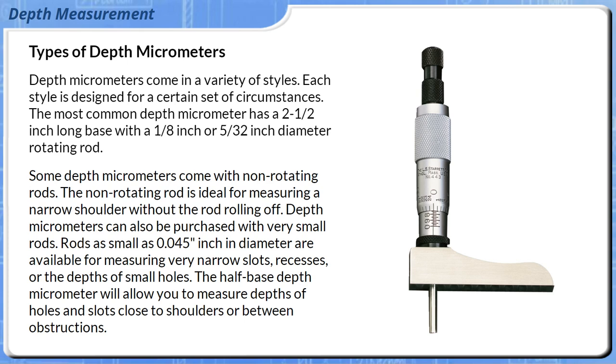Rods as small as 0.045 inches in diameter are available for measuring very narrow slots, recesses, or the depths of small holes. The half-base depth micrometer will allow you to measure depths of holes and slots close to shoulders or between obstructions.